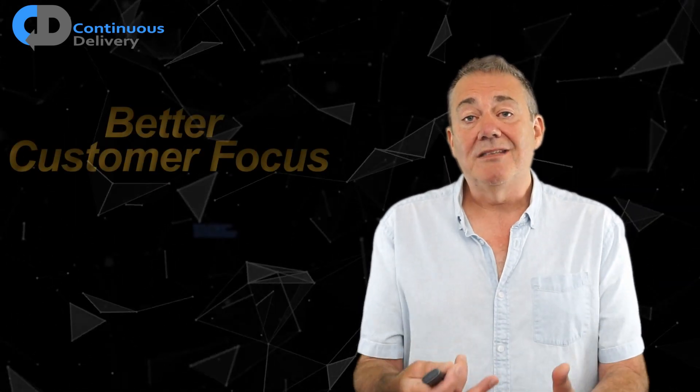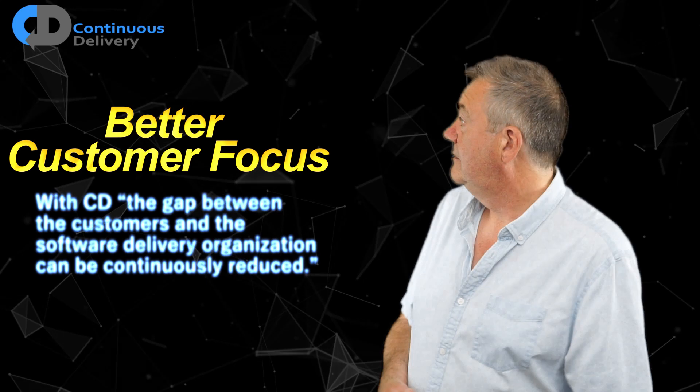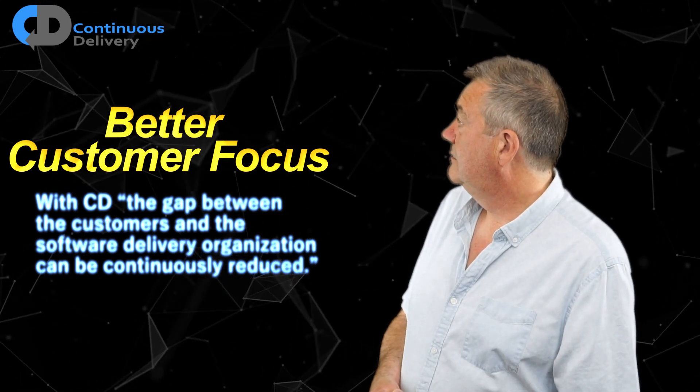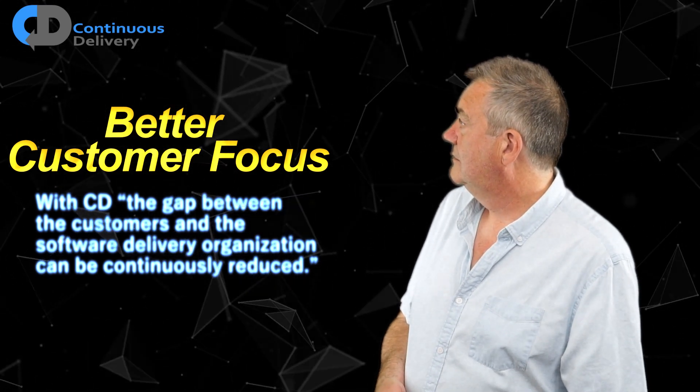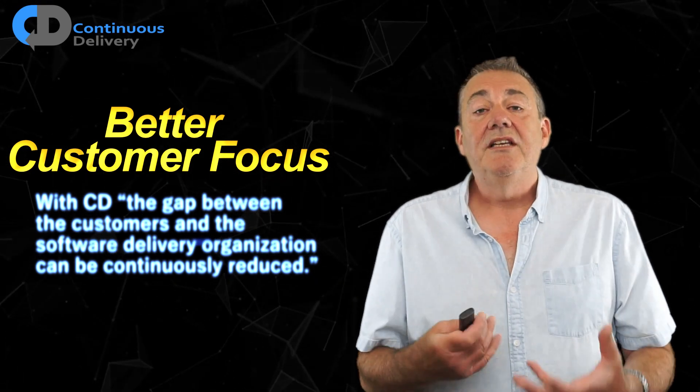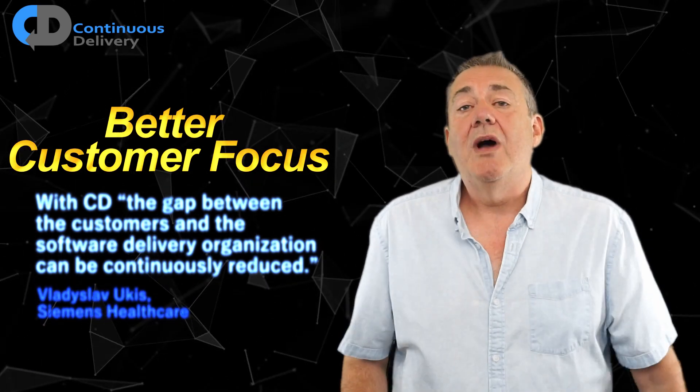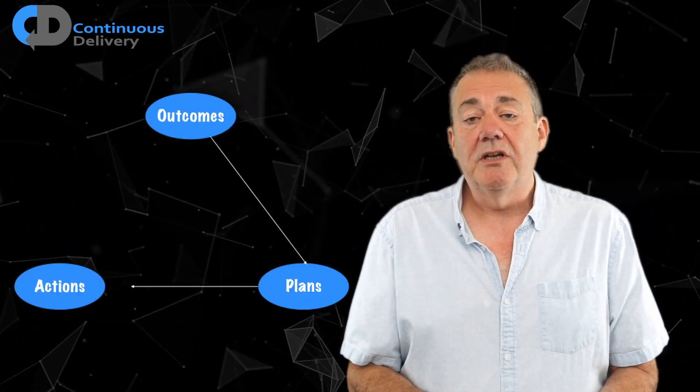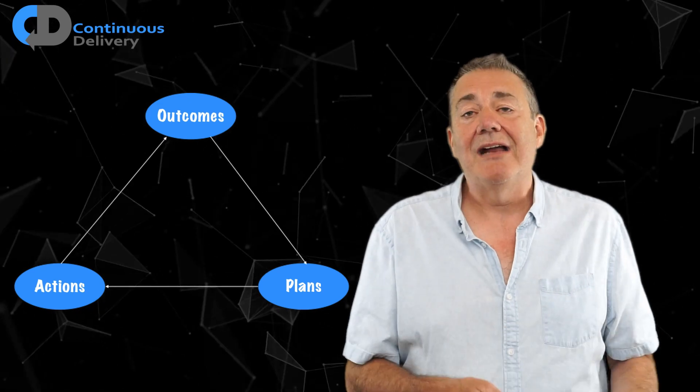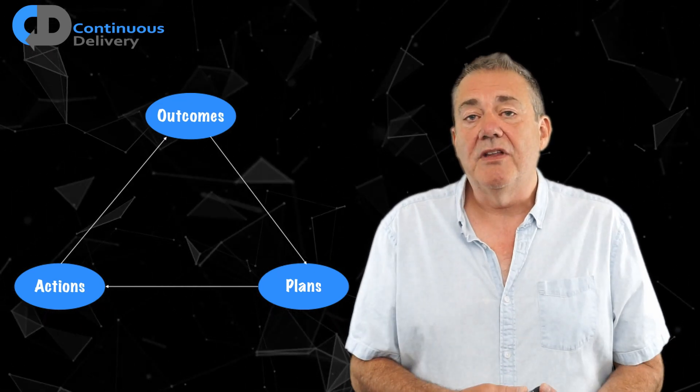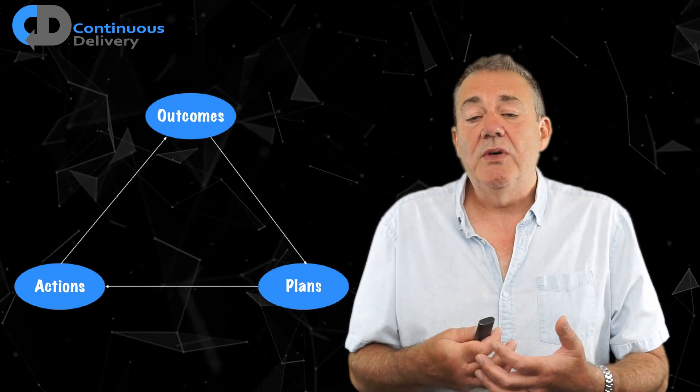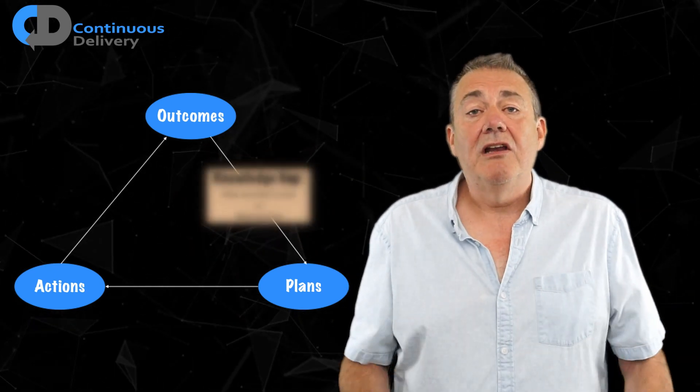The fourth on my list of attributes of continuous delivery organizations: it brings better customer focus. Quote: With continuous delivery, the gap between the customers and the software delivery organization can be continuously reduced. This is important because reducing the gaps is part of the way in which we can work more effectively. I like this model from Stephen Bungay's book, which talks about outcomes, plans, and actions, and the gaps between each of those activities.